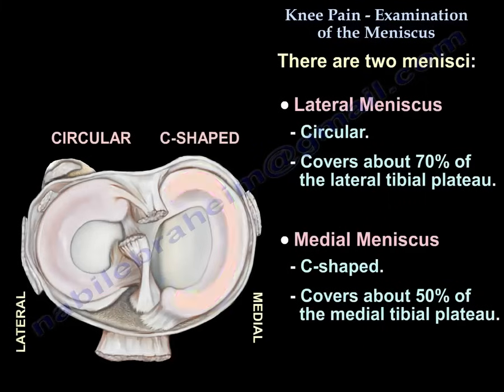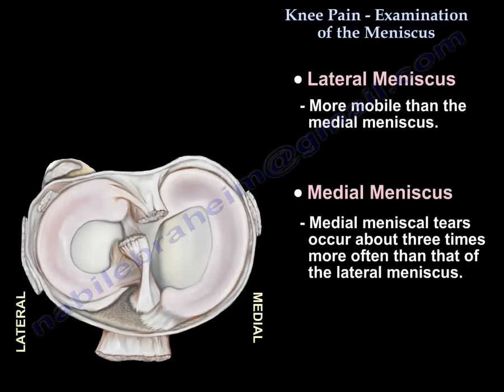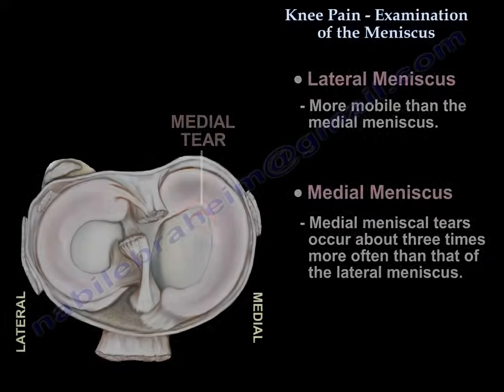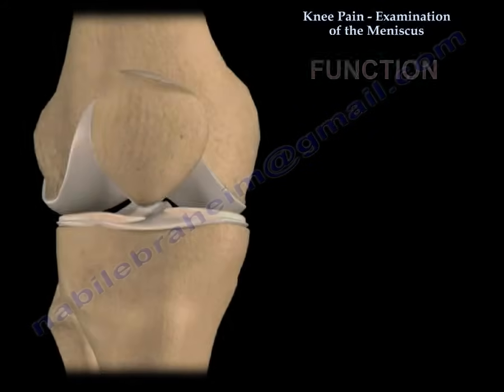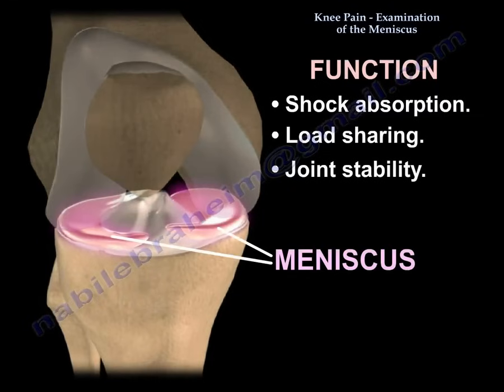The medial meniscus covers about 50 percent of the medial tibial plateau. The lateral meniscus is more mobile. The medial meniscus tear is about three times that of the lateral meniscus. Functions of the meniscus include shock absorption, load sharing, and joint stability.